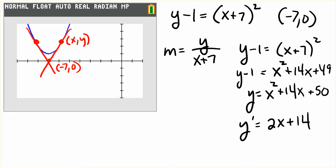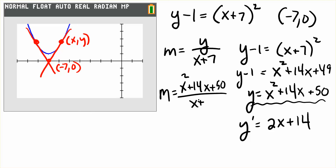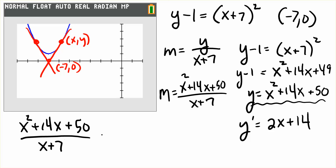When we take the derivative of that, we get 2x plus 14. Now we need to set the slope through the two points equal to the derivative at that point. Remembering the important idea that we're going to swap out the y, we rewrite the slope only in terms of x: y equals x squared plus 14x plus 50, over x plus 7.